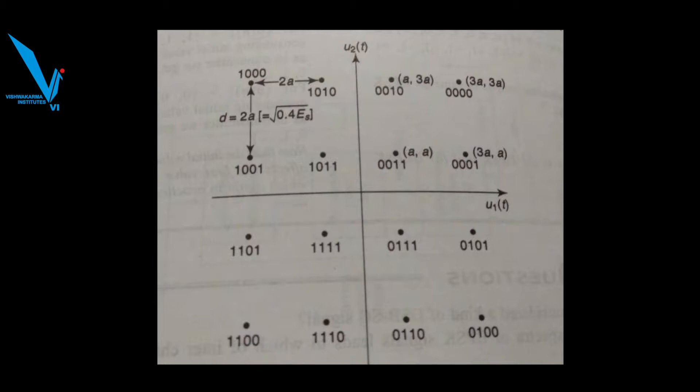Now the distance between two signal points is given by 2a, where a is the distance of each symbol from x-axis and y-axis. You see that the first symbol is represented by (a, a), that means a is the distance on x-axis and a is the distance on y-axis. So likewise, the distance between two symbols is 2a.